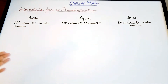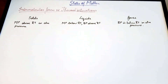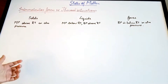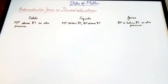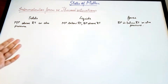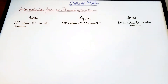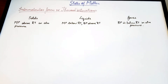Solids, liquids and gases — their condition depends upon temperature and pressure. MP means melting point, BP is boiling point, and RT is room temperature. The melting point of solids is above room temperature at atmospheric pressure, which is the pressure exerted by the atmosphere. Room temperature is 20 degrees Celsius.